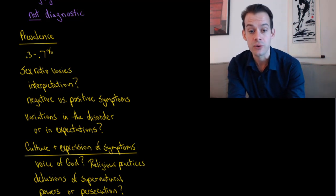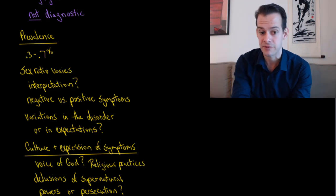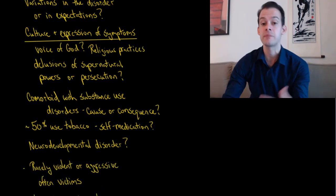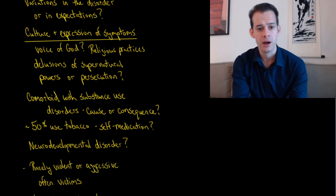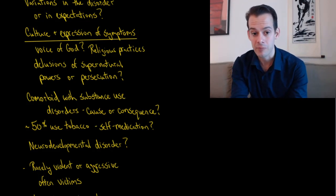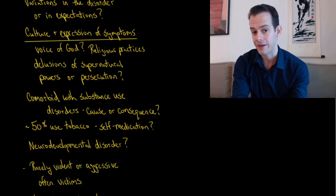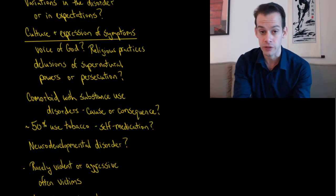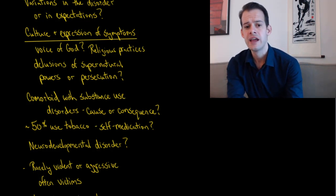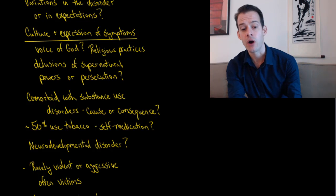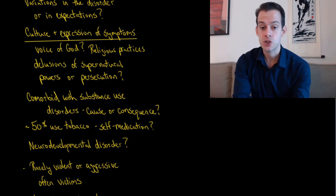We could also think about how it relates to expectations for how to express certain types of behavior. This brings us to the role of culture in thinking about the expression of symptoms. We might wonder about certain religious practices and how those might play a role in how we determine whether something is a symptom of a mental illness or not. We have of course many religious stories involving hearing the voice or the voices of God or gods. We might think about how people would interpret that as being part of a religious context or as part of an indication of a mental illness. Or we can also think about this for delusions of supernatural powers.